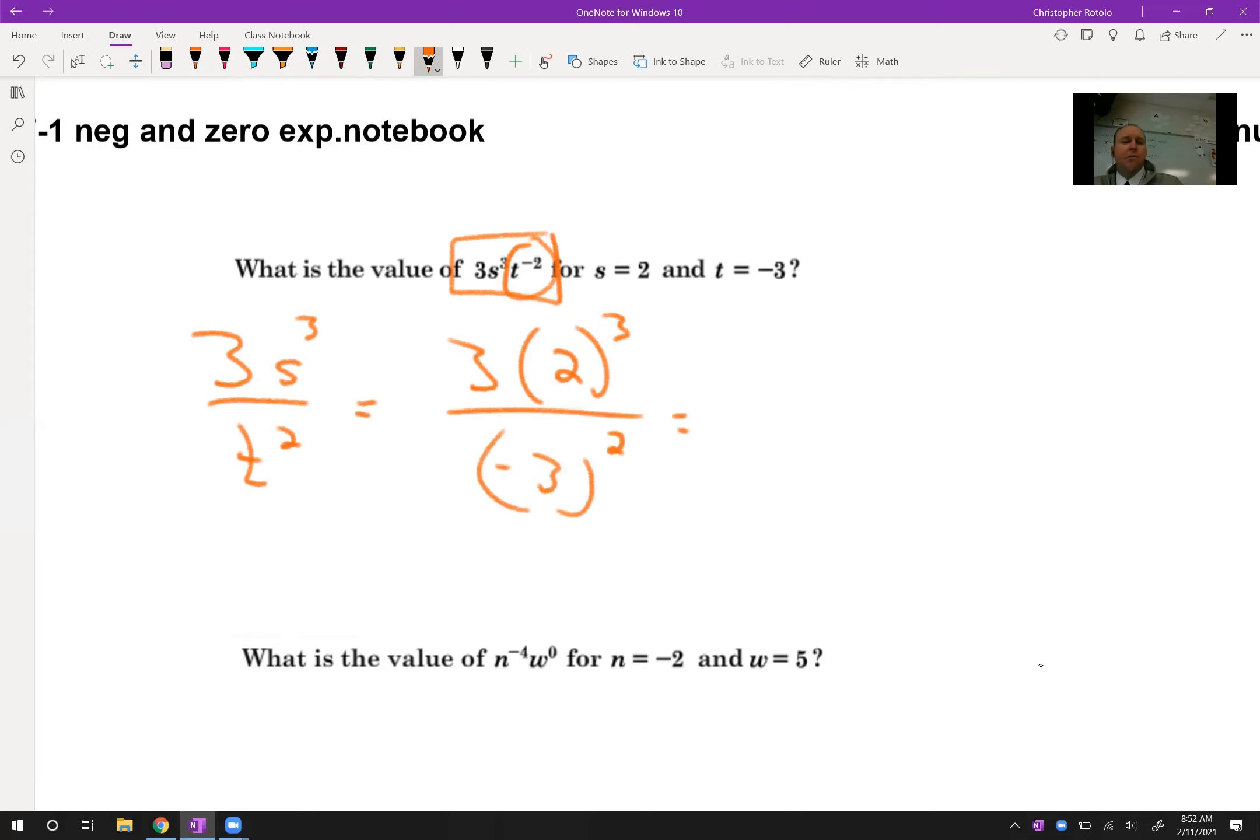Alright, so order of operations, I do have to multiply with my exponents. I have to do my exponents and then multiply. So I have to take care of 2 to the 3rd. So that's going to be 2 times 2 is 4 times 2 is 8. And negative 3 times negative 3 is 9. Alright, one thing I'm going to do here is I'm going to reduce this before I go any further because I don't want to have to multiply it up and then bring it back down. So if I can reduce any of my factors top to bottom, we're going to do that. So I get 8 over 3.